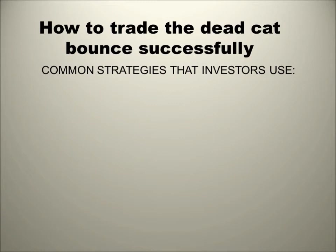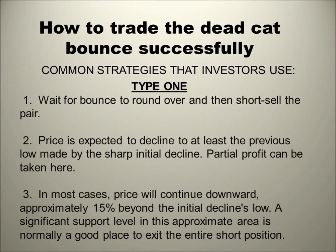Here are some strategies that investors use when they trade the dead cat bounce. For Type 1: we can wait for the bounce to round over, and then short sell the pair. Once the market has hit a low and prices have risen, at the end of the second stalling of the corrective pattern — not the stalling on the bearish trend but the stalling on the corrective trend — that would be a good opportunity to short that pair.